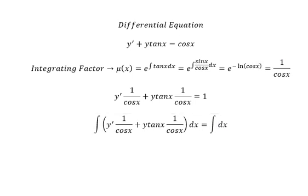So we will get y over cosine x, and this will be x plus c. We multiply both sides with cosine x.